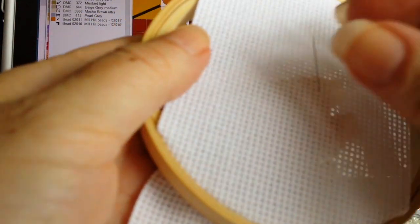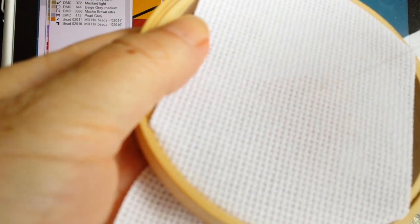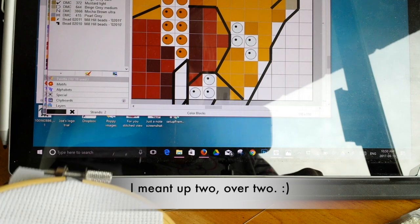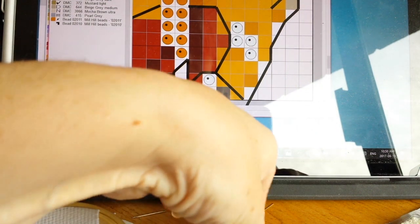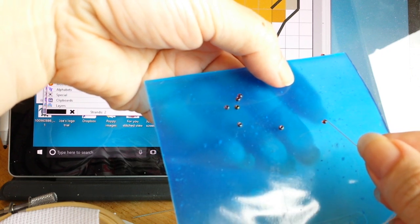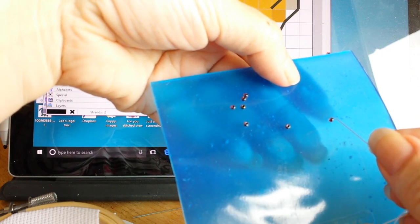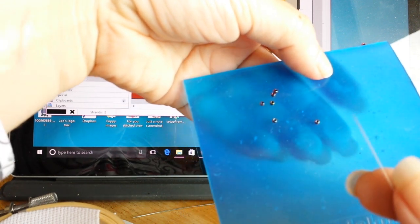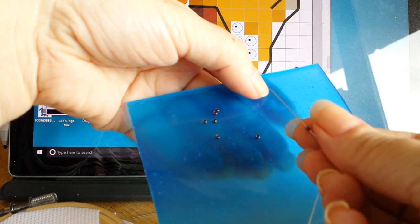So what I'm going to do, so in this case, I'm going to go over one. If you're doing, say 25 count over two or 28 count fabric over two, then you're obviously going to go up one over two. So this is a really simple way of doing beading. So I'm going to show you here.